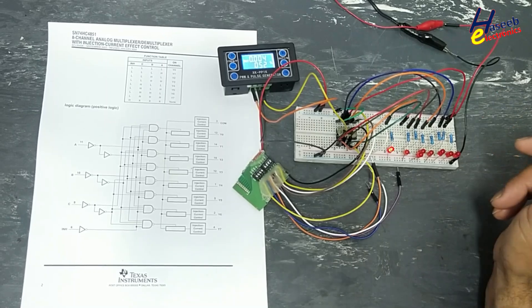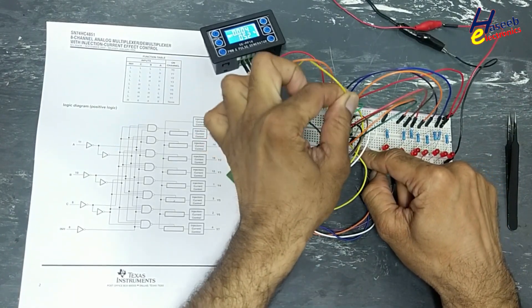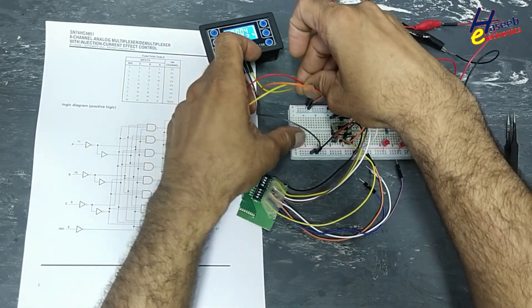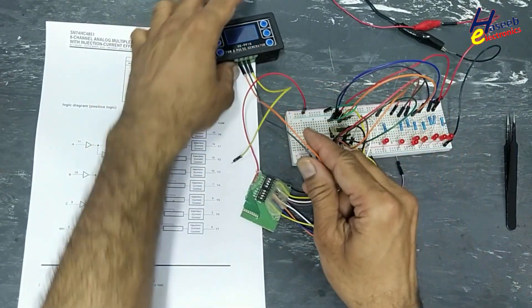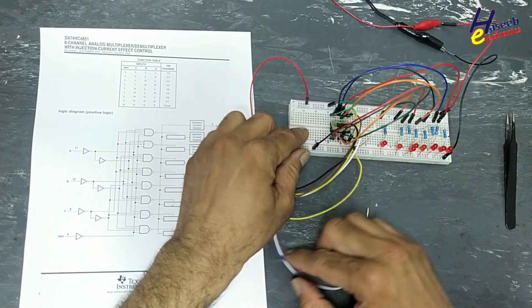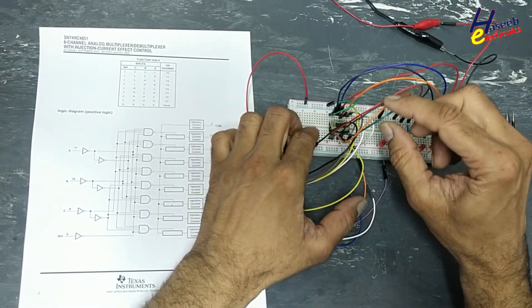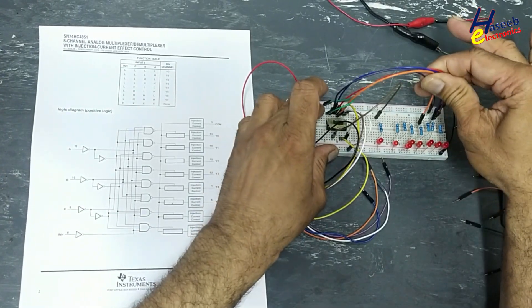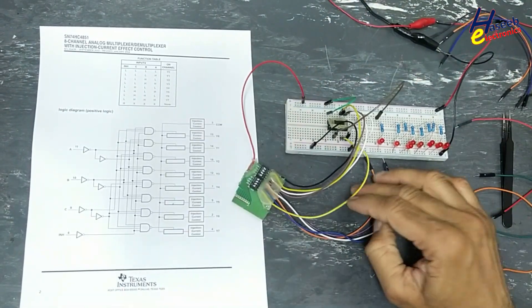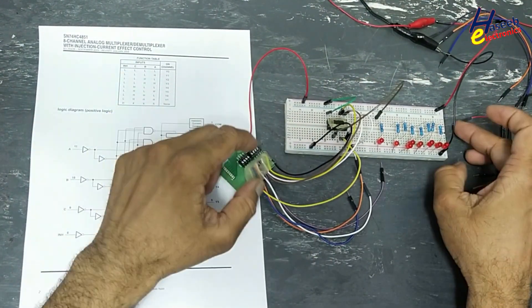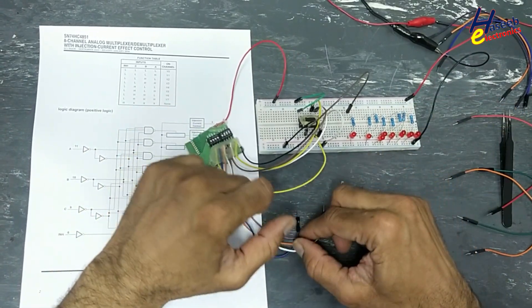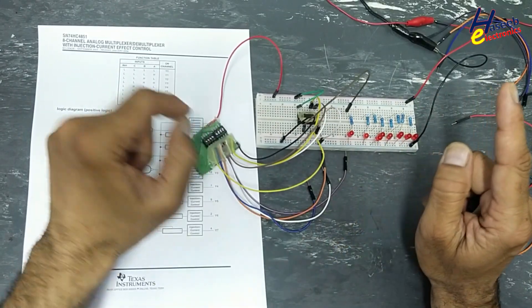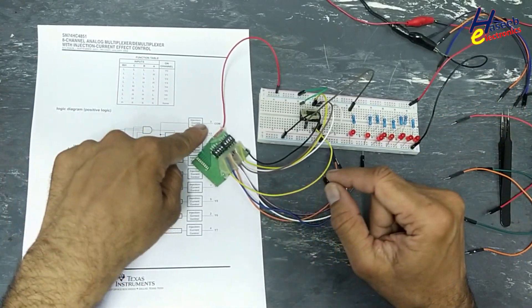Now we will see the multiplexer function. We will remove this signal. We will connect one LED at pin number three. Now I disconnected all LEDs, just on the inhibit signal, control input.